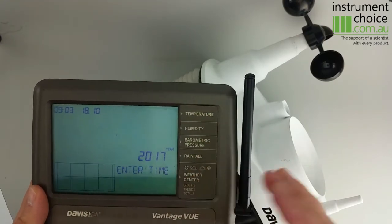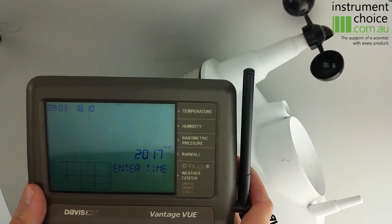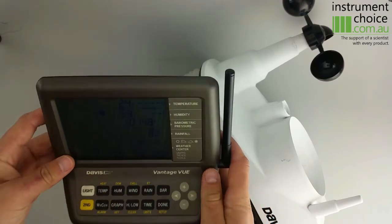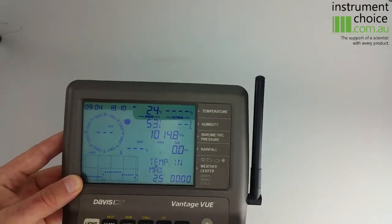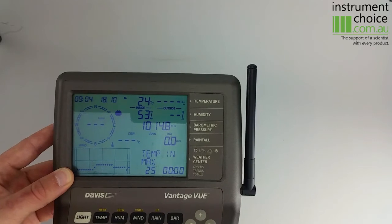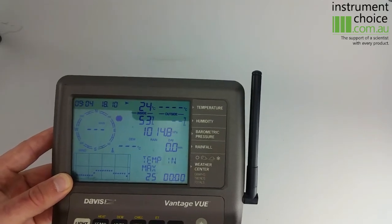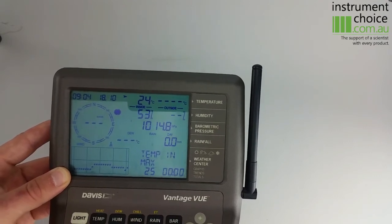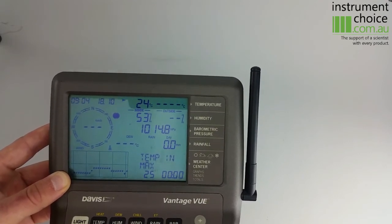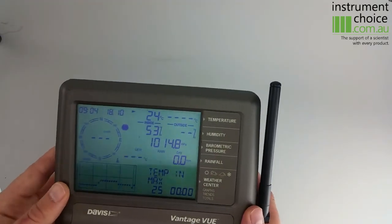Once you've gone through that, your console will now be set up and you'll need to hold down the done button. The console will now show your indoor results. It'll start to receive from the outdoor transmitter. In general it takes a couple of minutes, but it can take up to 20, so bear that in mind.